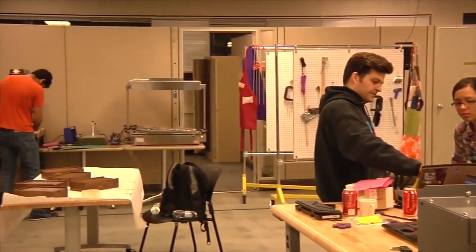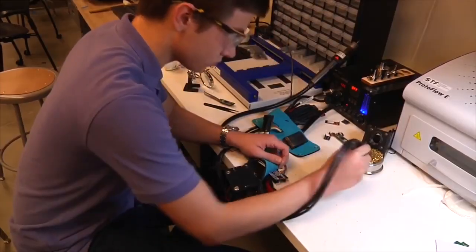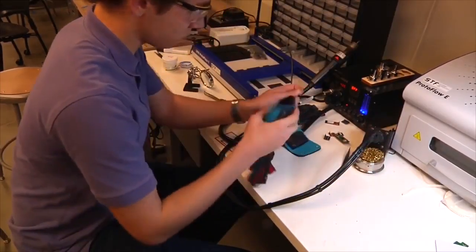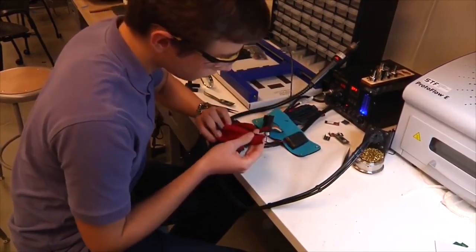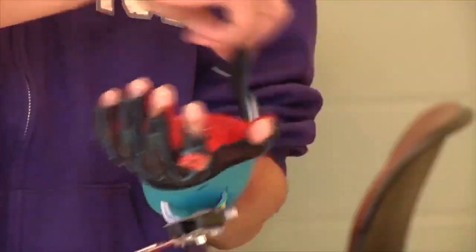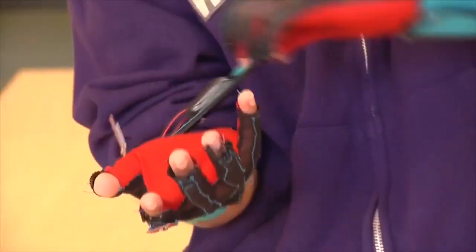These gloves were developed by two University of Washington students. The gloves are capable of translating American Sign Language into speech and text. The two students have won $10,000 for their project. They used five flex sensors and an accelerometer to measure hand position and hand movement in order to translate the sign to appropriate words or phrases.